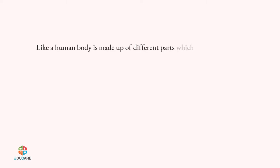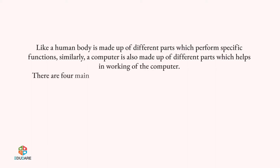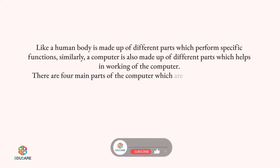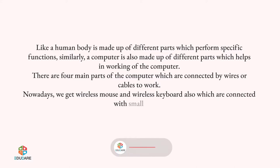Chapter 2: Parts of a Computer. Like a human body is made up of different parts which perform specific functions, similarly a computer is also made up of different parts which help in its working. There are four main parts of the computer which are connected by wires or cables to work. Nowadays, we get wireless mouse and wireless keyboard also, which are connected with a small sensor.